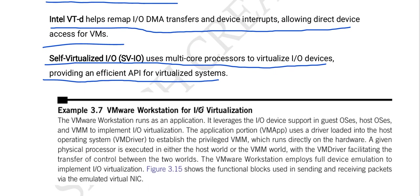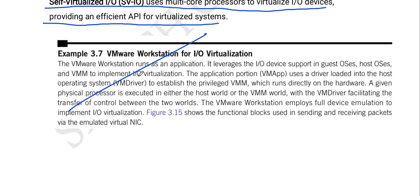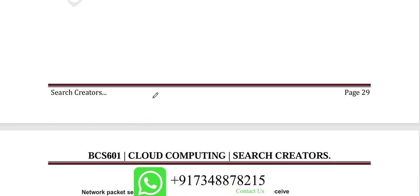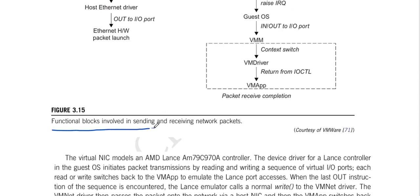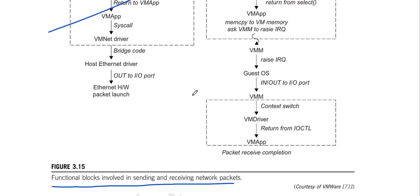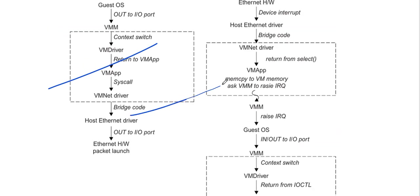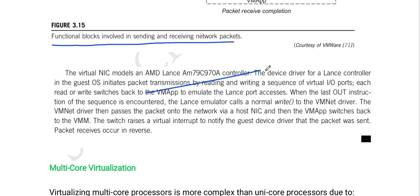In this example, we can observe VMware Workstation for I/O virtualization, and some theory content about this is given below. In this figure, we can observe the functional blocks involved in sending and receiving network packets. Some theory content about virtual NIC models and sending and receiving network packets is given below.